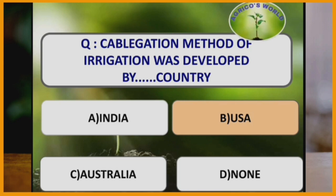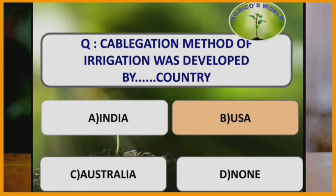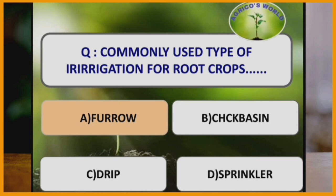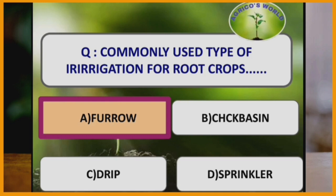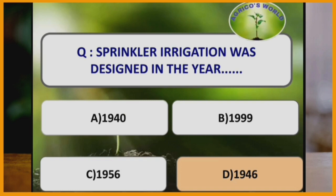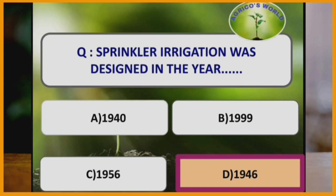Coobligation method of irrigation was developed by the country USA. Furrow method of irrigation is a commonly used method of irrigation for root crops. Sprinkler method of irrigation was designed in the year 1946.